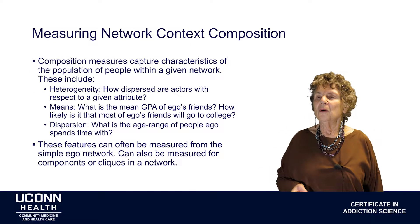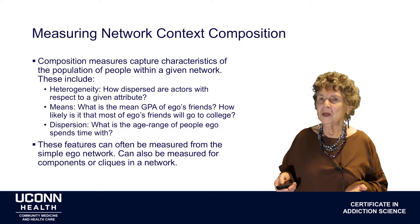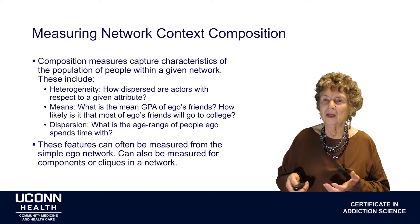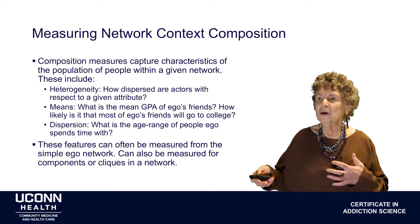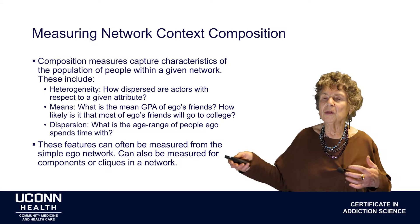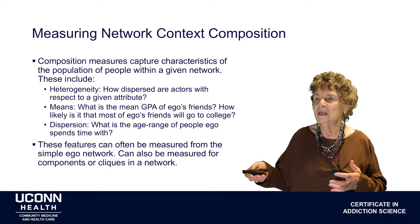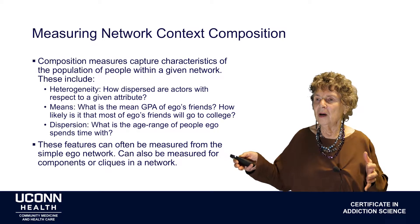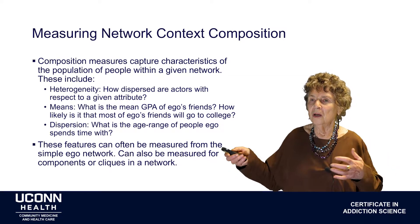We measure network context composition, which captures the characteristics of a population of people within a given network. We can talk about heterogeneity — for example, we want to know whether people who share an attribute, such as class, are closely connected or dispersed throughout the network. Similarly, if it's some kind of risk behavior, are people who conduct it close together or arrayed throughout the network, which means they're likely to communicate that risk behavior to others not in their immediate network.